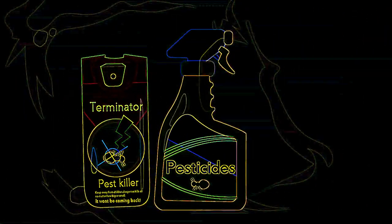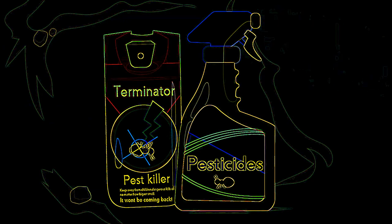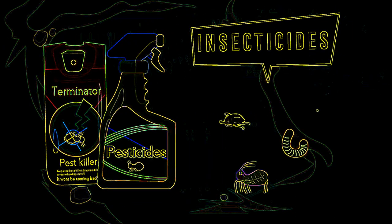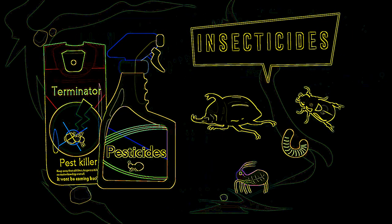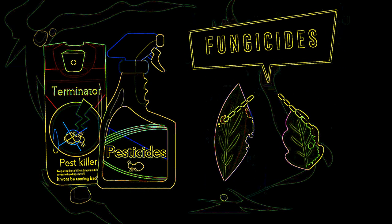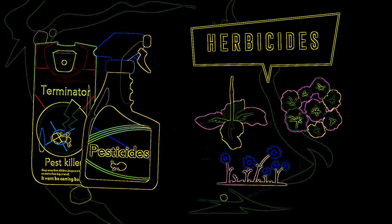Pesticides are natural or synthetic chemicals that are sprayed on crops. They include insecticides that control insects, fungicides that control fungi, and herbicides that control weeds — other plants that are not supposed to grow with the crop.